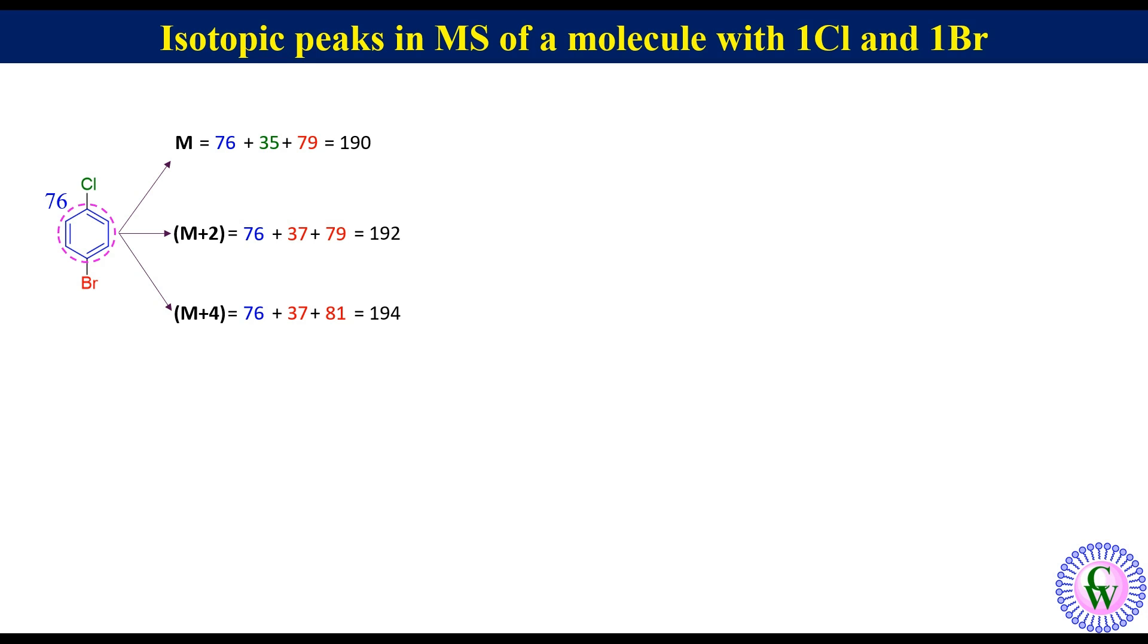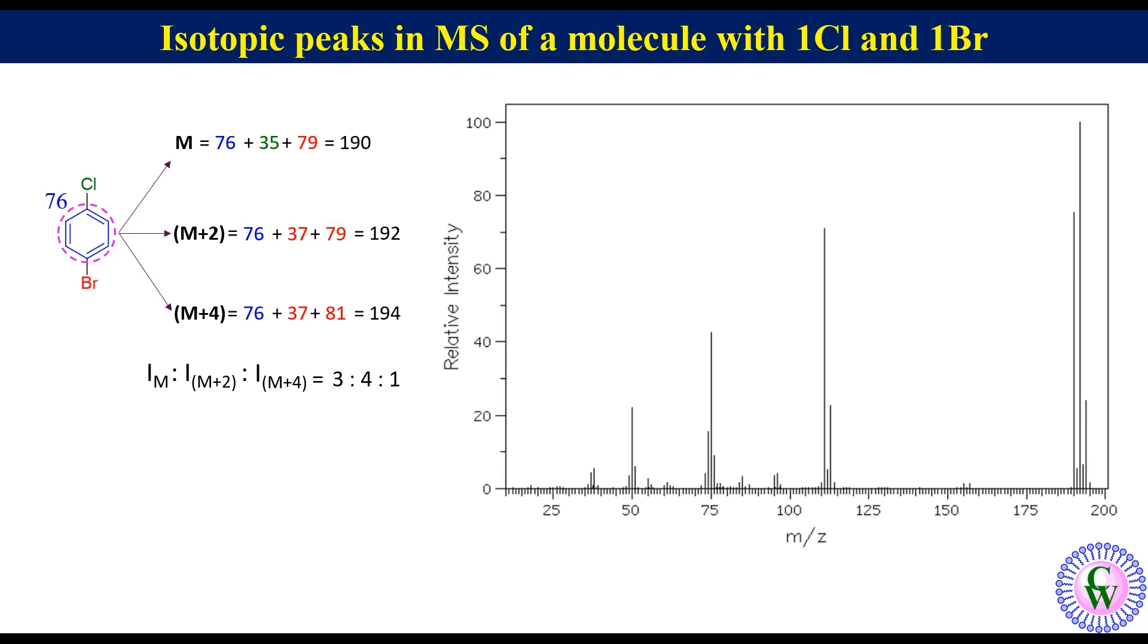The intensity ratio of M, M plus 2, and M plus 4 peaks will be 3 to 4 to 1. This is the mass spectrum of 1-bromo-4-chlorobenzene. These are M, M plus 2, and M plus 4 peaks with m/z 190, 192, and 194, with the intensity ratio of 3 to 4 to 1.